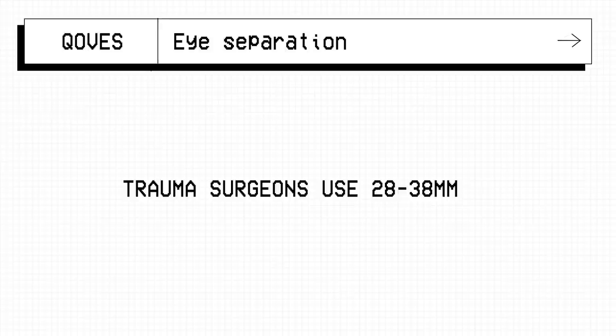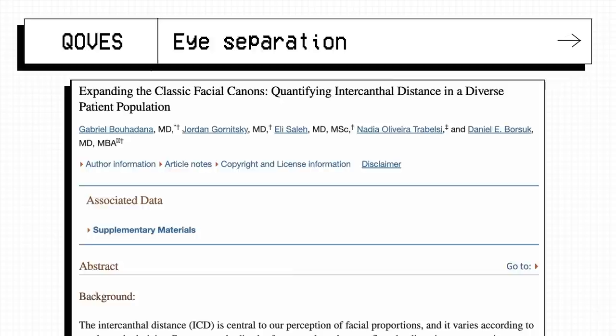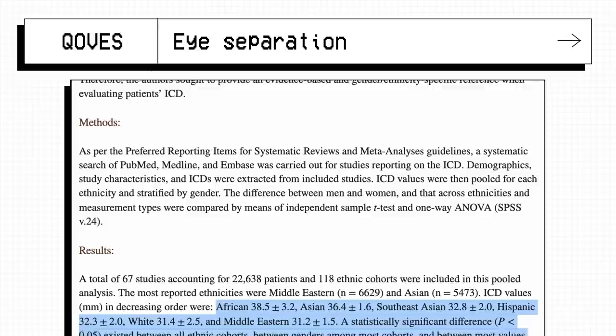The established average that trauma surgeons use is 28-38mm for both sexes from Friedhofer 1980s. Buhadana 2022 shows from 22,000 patients and 118 ethnicities the average distances, where chances are if you fall outside of this range for your ethnicity people may notice or comment on your eye spacing.